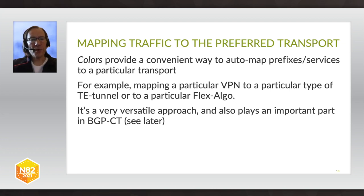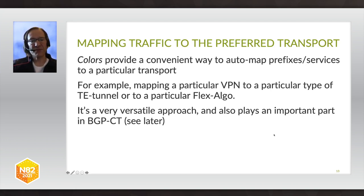I've been saying we map certain traffic to a Flex-algo, but I haven't said specifically how you achieve that mapping. The way we do this is using a property called colors. A Flex-algo is given a particular color, which enables mapping of traffic to it. Similarly, TE tunnels — whether SRTE or RSVP tunnels — can be given a color to facilitate mapping of particular traffic to them as well. As we'll see later, colors are also used in BGP Classful Transport, so we'll meet colors again when we get to that part of the session.